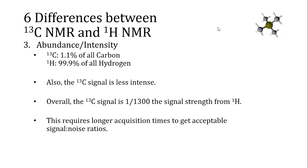A third difference between carbon and hydrogen in NMR spectroscopy is in the abundance of carbon-13. Carbon-13 is only 1.1% of all carbon atoms, while hydrogen-1 (protium) is 99.9% of all hydrogen atoms. So carbon-13 is already at a disadvantage. In addition, the NMR signal from carbon-13 is less intense because carbon-13 has a smaller magnetogyric ratio — it interacts less strongly with magnetic fields. Overall, the signal strength from a C-13 sample is 1/5800th the signal strength from a hydrogen sample of the same concentration.